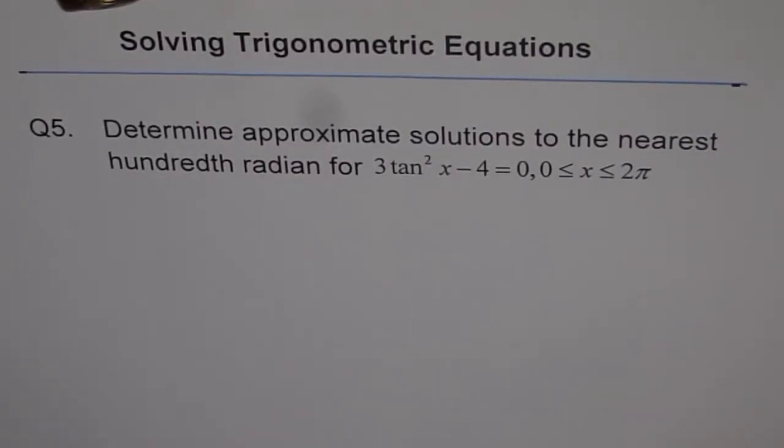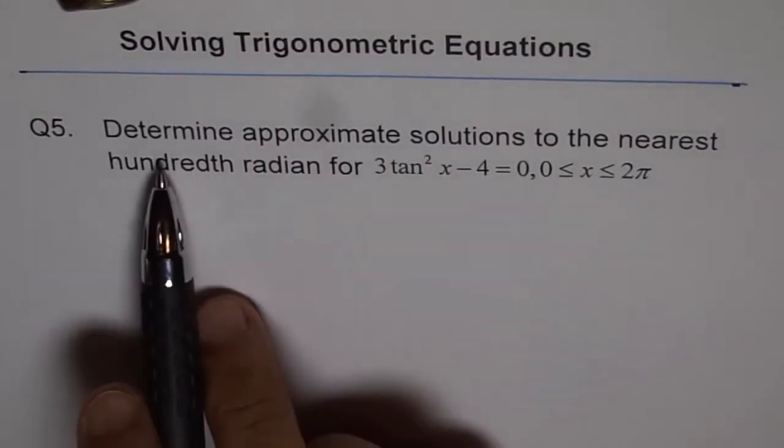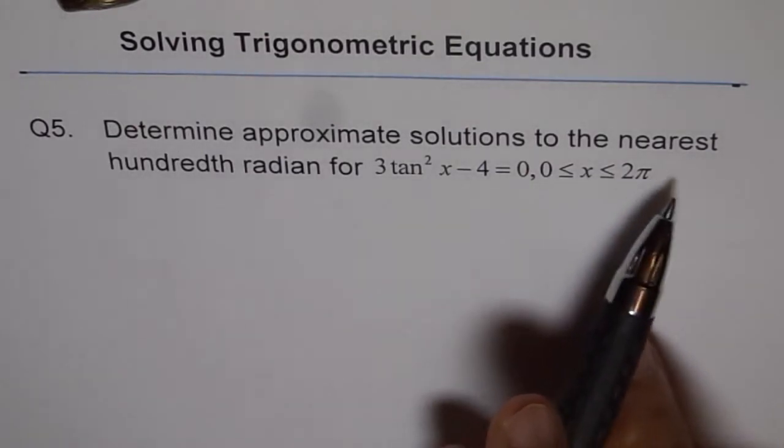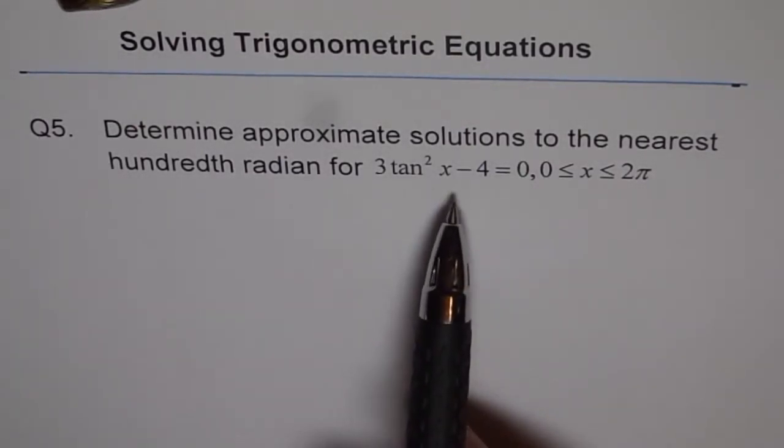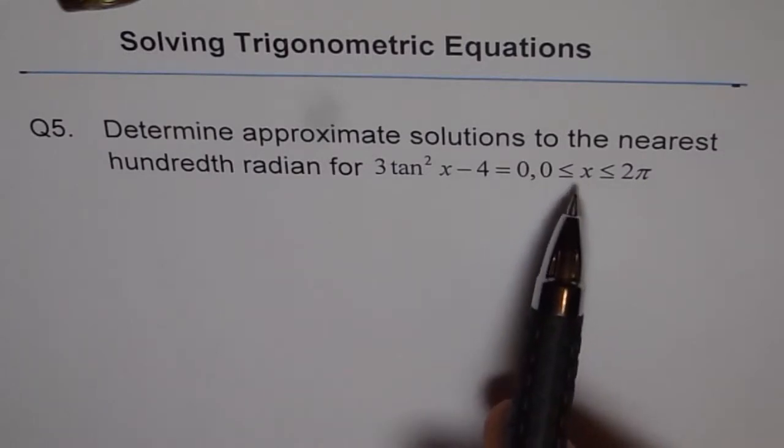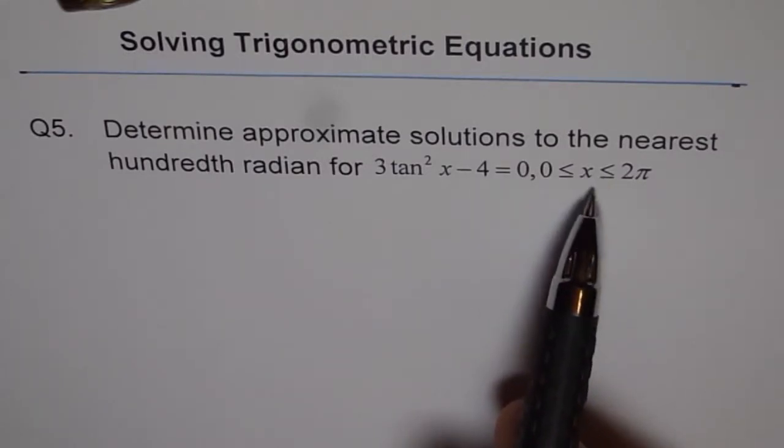Solving trigonometric equations, question 5. Determine approximate solutions to the nearest hundredth radian for 3 tan squared x minus 4 equals 0, where x is greater than or equal to 0 and less than or equal to 2π.